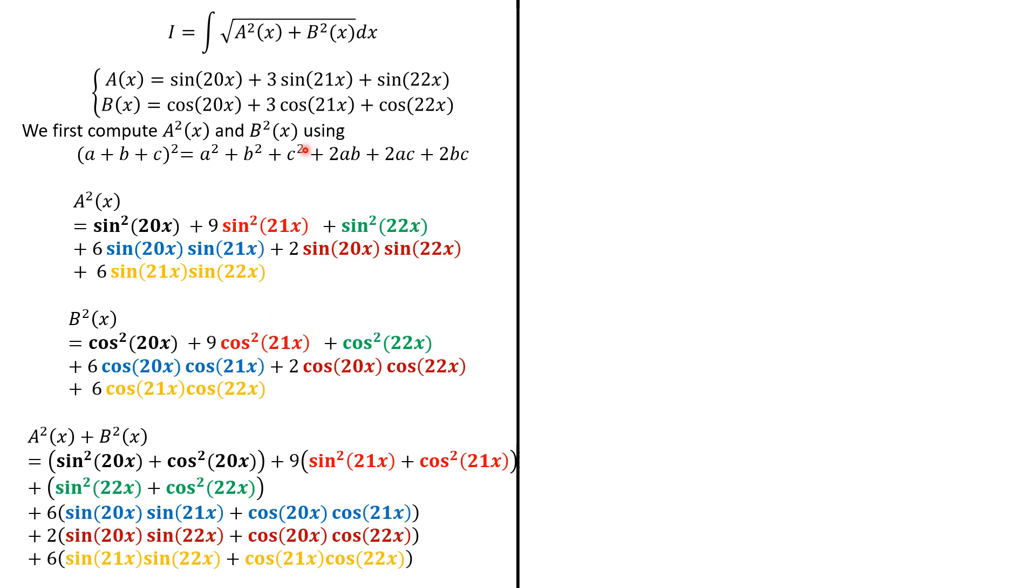Now, we need to know two formulas. The first one is well known: cos²(u) + sin²(u) = 1. And the second one is the addition formula for the cosine to have this. So, A² + B² is going to be 1 here in bold, 9 in red, and 1 in green.